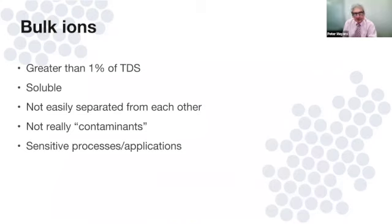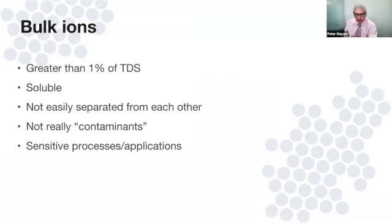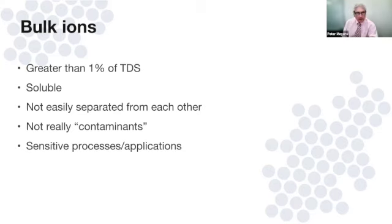Bulk ions are defined as being greater than one percent of TDS — trace ions, as covered in the previous webinar, are less than one percent. Bulk ions are generally very soluble, not easily separated from each other, and they're not really contaminants; they're the constituents, the salts you typically find in almost every natural water supply. On the cation side, the four most common bulk ions are sodium, potassium, calcium, and magnesium.